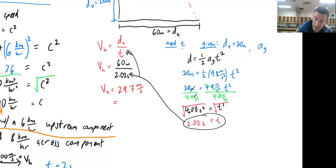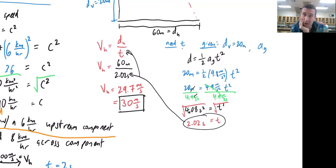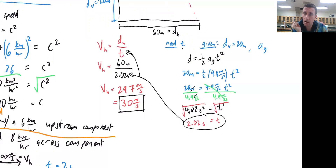Since the values given are just two digits — 60 is two digits, 20 is two digits — I should leave my answer in two digits. So velocity horizontal equals 30 meters per second. That's how fast the boy throws the ball, which is about 65 miles an hour — a pretty good toss but reasonable. You could definitely throw a ball at 65 or 70 miles an hour, and he ends up sending it 60 meters, which is more than half a football field. Seems reasonable.